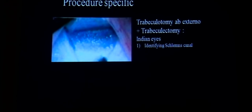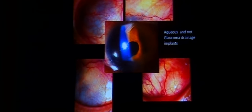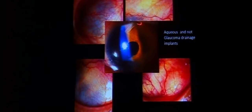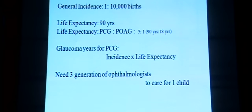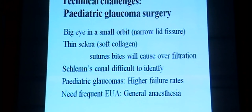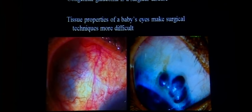A difficulty in aqueous drainage device procedures is identifying Schlemm's canal. One patient presented with two surgeries done earlier — superior nasal and inferior temporal staphylomas — requiring a first and then a second tube. Glaucoma accounts for one in ten thousand live births; with an average life expectancy of 90 years, you need three generations of ophthalmologists to care for one child. Congenital glaucoma is a surgical disease.